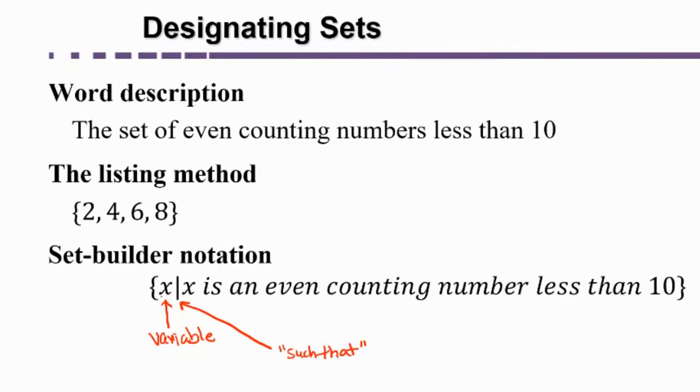And so this is saying the set of all elements x such that, and then we have all of this is just describing x, describing the elements of the set. So what do we know about the elements of the set? We know that they're even counting numbers less than 10. Sometimes this description is given in words.